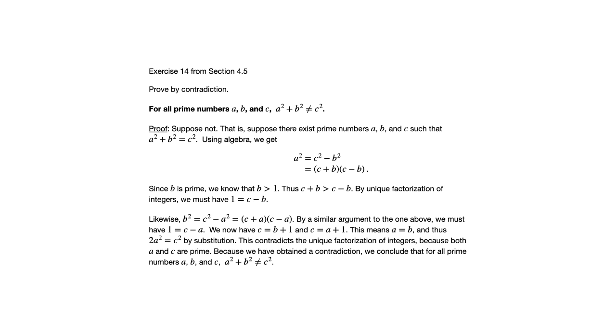Now a is prime, c is prime, two is also prime. So on the left side, we have two times a times a. On the right side, we have c times c. That contradicts the unique factorization of integers because on one side we have the prime factors two and a. And on the right side, we have c times c. Those can't be the same, but they must be the same. So there's our contradiction.